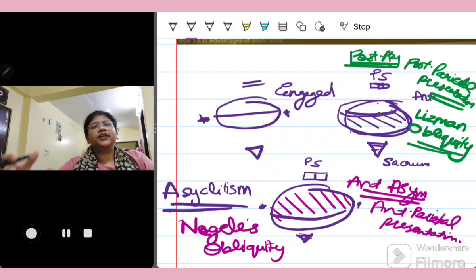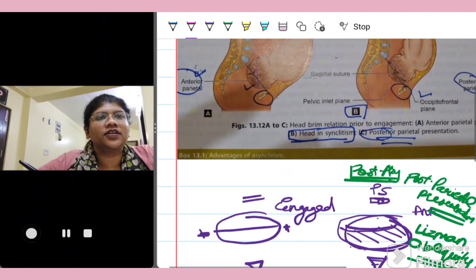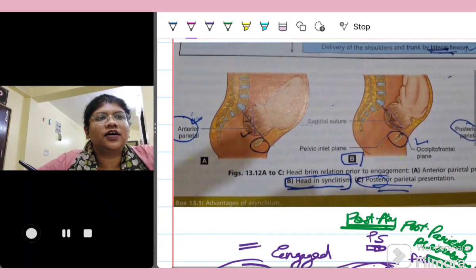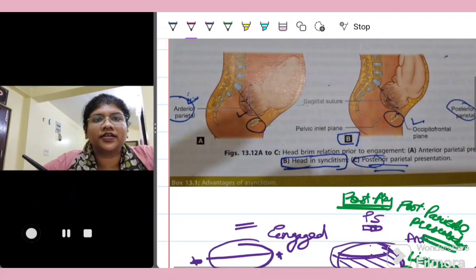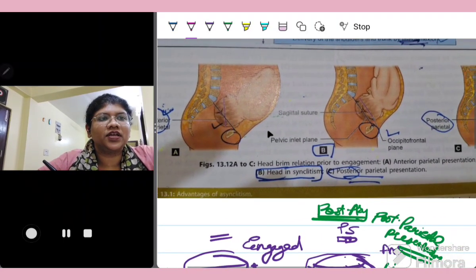So this is the Naegele's obliquity or the anterior parietal presentation or the anterior asynclitism. So let me just show you in a diagrammatic fashion. This picture I have taken from the Dutta textbook of obstetrics where you can clearly see that they have demonstrated the same thing.